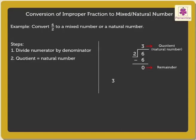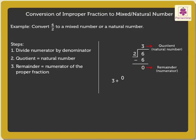Step 3: The remainder is the numerator of the proper fraction. Thus, 0 is the numerator of the proper fraction. Step 4: The denominator will be the same denominator of the given improper fraction. Therefore, we write the denominator as 2.